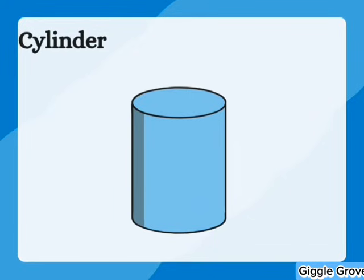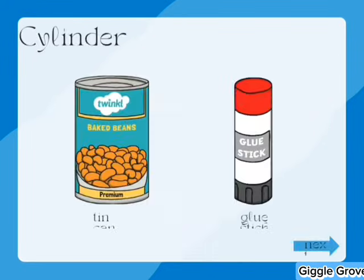A cylinder is a 3D shape with two circular bases and a curved side.